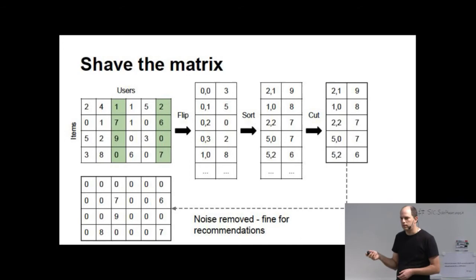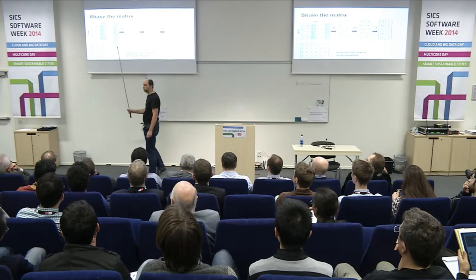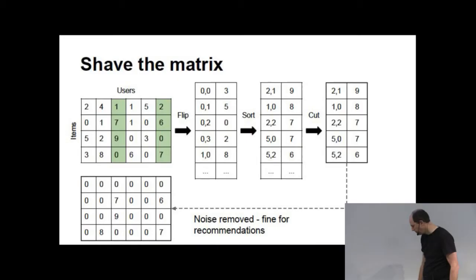Is this comprehensible? Yeah, the first flip is coordinates on the left. So zero, zero, that's this point, three. Zero, one, that's this five, zero, two, and so forth. So it's the same data, just flipped around.